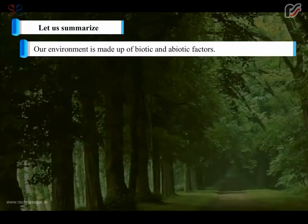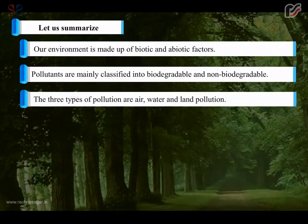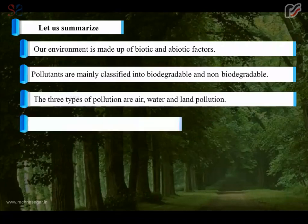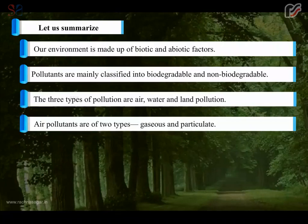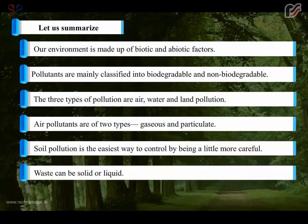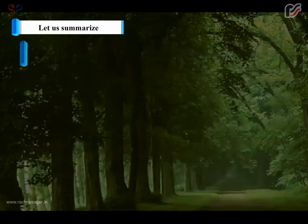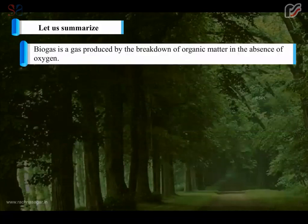To summarize: our environment is made up of biotic and abiotic factors. Pollutants are mainly classified into biodegradable and non-biodegradable. The three types of pollution are air, water, and land pollution. Air pollutants are of two types: gaseous and particulate. Soil pollution is the easiest to control by being a little more careful. Waste can be solid or liquid. Greenhouse gases cause global warming. Biogas is a gas produced by the breakdown of organic matter in the absence of oxygen.